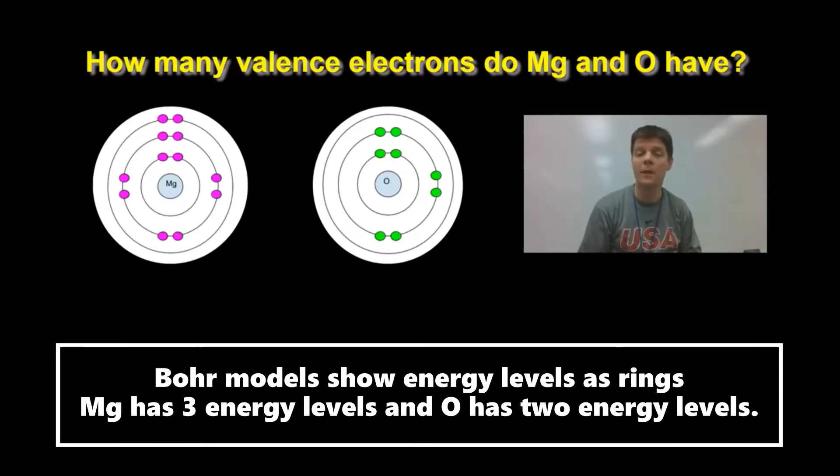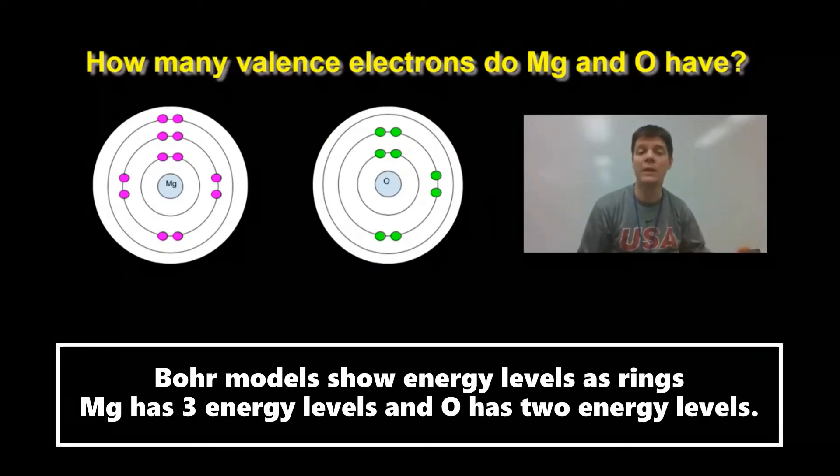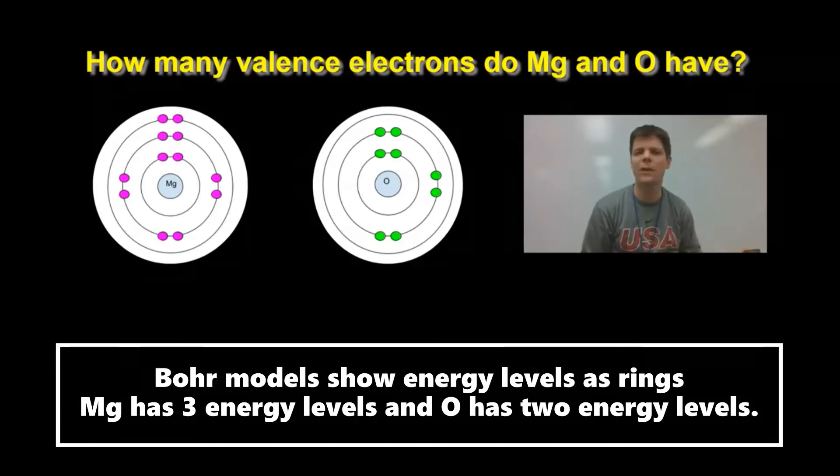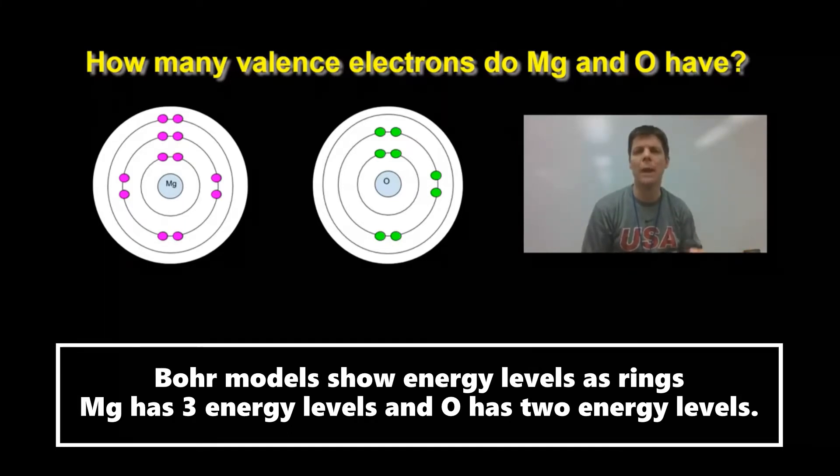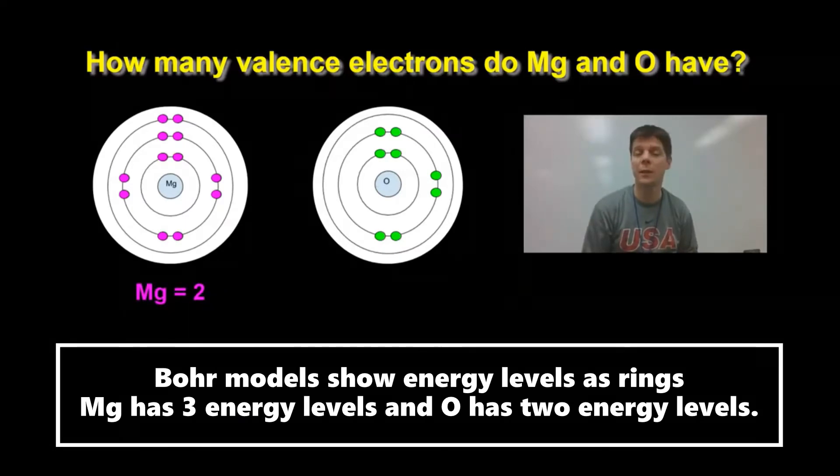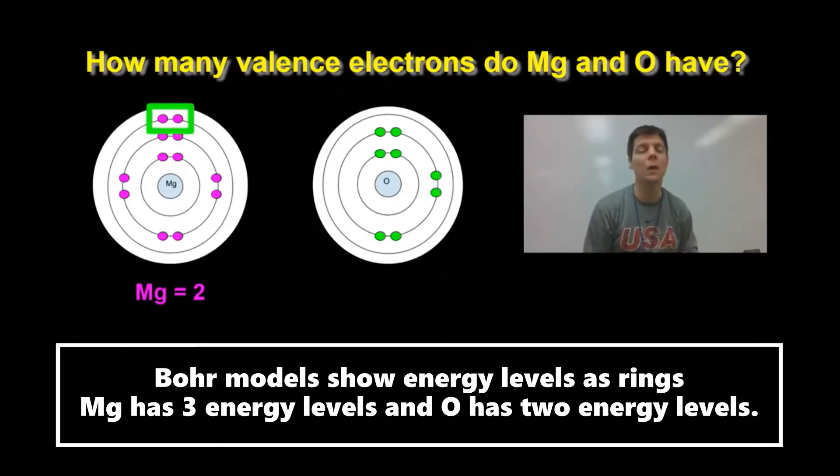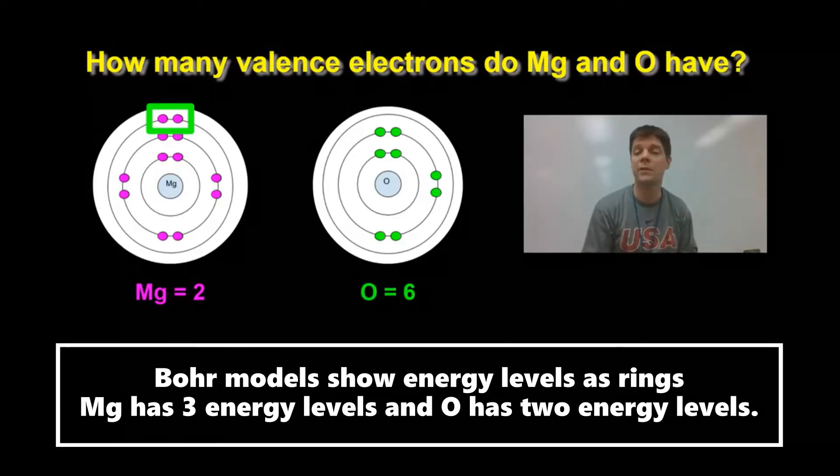If we look at a Bohr model for magnesium and oxygen atoms, we can see that the valence electrons are the ones in the outer ring. For magnesium, there are 2 valence electrons. We see that in the third ring, the third energy level. For oxygen atoms, we can see that there are 6 valence electrons. Those are found in energy level 2.